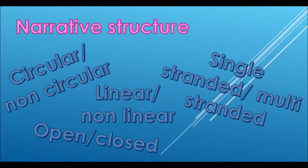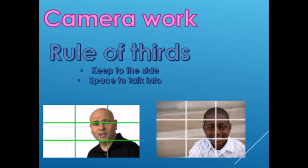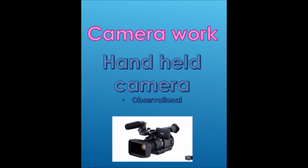Cam work is very important when it comes to documentaries, especially in interviews. A coding convention is called the rule of thirds. This is when in an interview, the position of the person is on a side — either left or right — with the space to talk into in the middle of the screen. Many observational footage shots use a handheld camera so the cameraman can move around to get all the footage they can and see all surroundings.